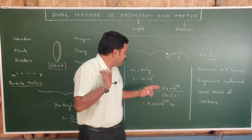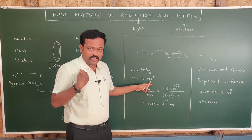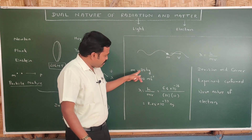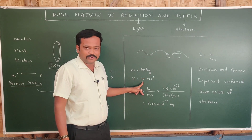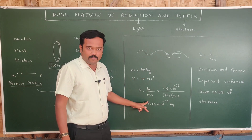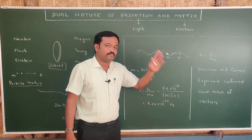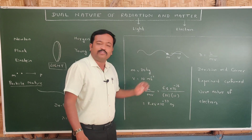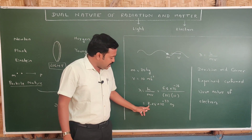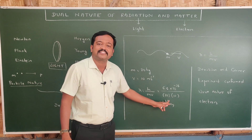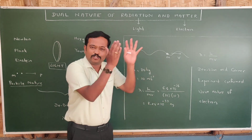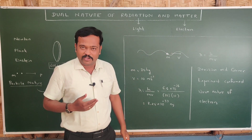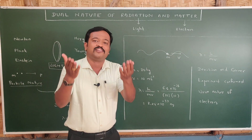So if I am moving with 10 meters per second, am I associated with a wave, and what is its wavelength? My mass is 80 kg. If I am moving with velocity 10 m/s, wavelength equals h divided by mv. h is 6.67 times 10 raised to minus 34 (Planck's constant), mass is 80 kg, velocity is 10 m/s. If I calculate this, I will be associated with a wavelength of 8.25 times 10 raised to minus 37 meters, which is too small. When I am moving, a wave is associated with me but you cannot see that wave because the wavelength is too small.